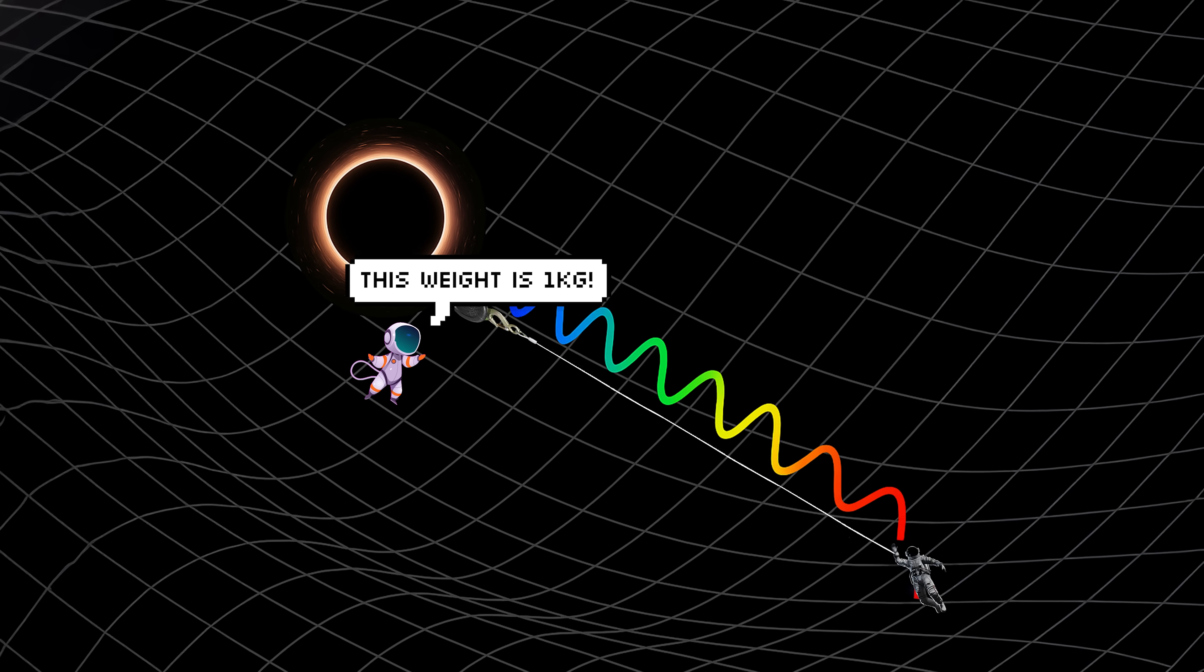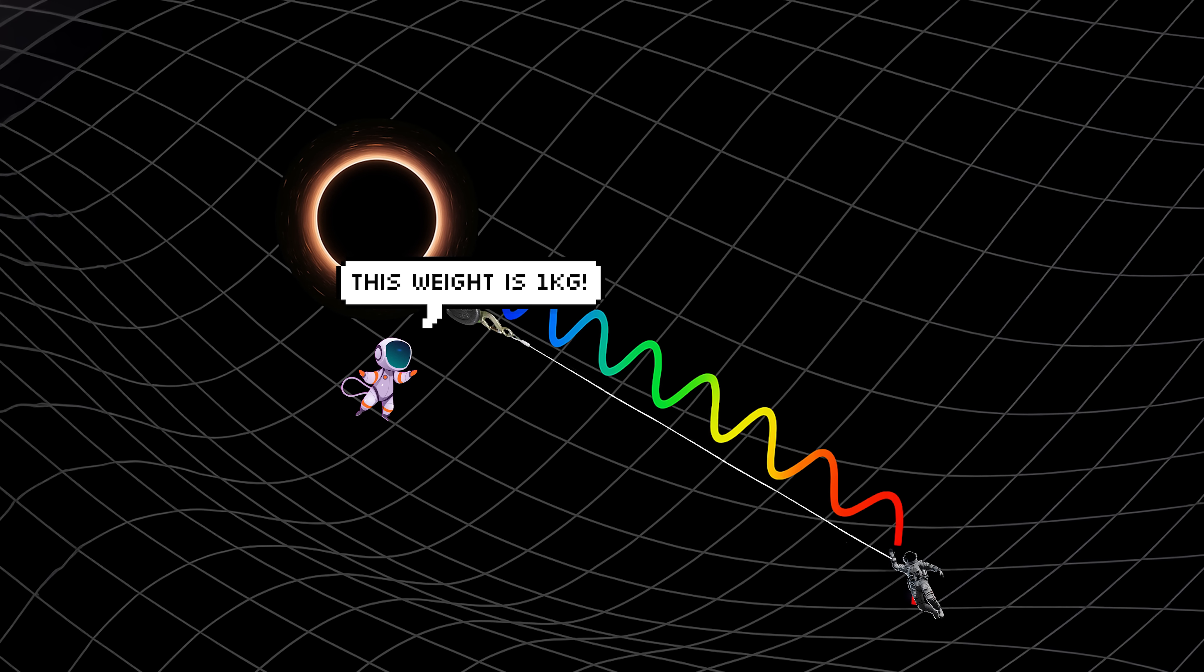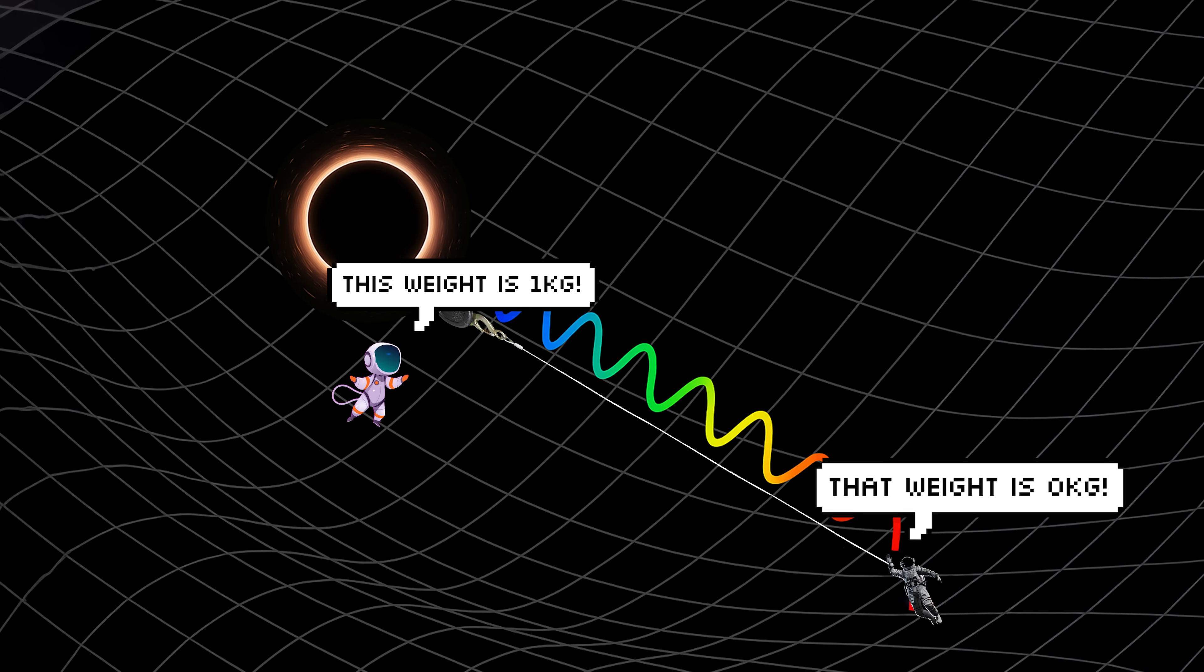So the difference in mass energy of the object is completely dependent on where we are relative to the black hole. So according to the black hole, it's just gained one kilogram of mass when it drops in. But according to you, far from the black hole that extracted its energy along the way, it gained no mass. But how could that be?